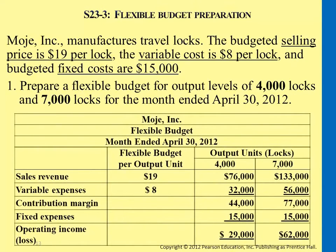Overall, the flexible budget table shows that at a certain sales price and a certain level of variable expenses, but at different sales volume levels, what is the overall operating income we're getting. So just use $19 for each unit times 4,000 units, and $19 times 7,000 units, and you get sales revenue.